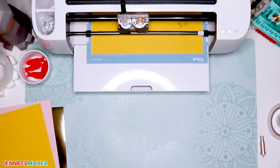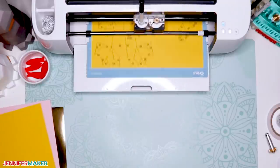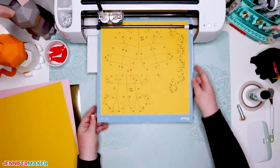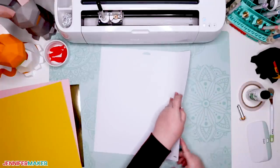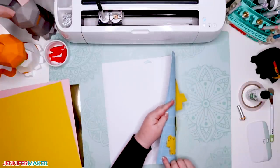Once everything is all drawn, scored and cut, you can press unload to remove your machine mat. Now flip your mat over onto your work surface and gently peel the mat away from your cardstock to avoid curling or ripping your paper.